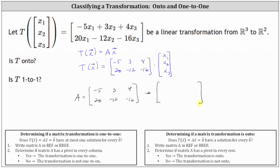I've already found the reduced row echelon form. In reduced row echelon form, the first row is one, negative three-fifths, negative four-fifths, and the second row is a row of zeros.